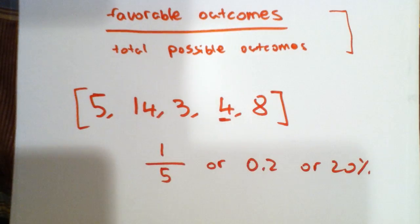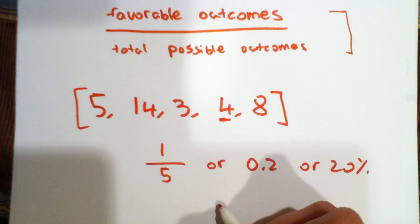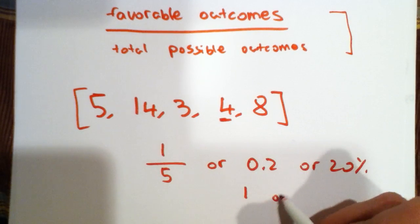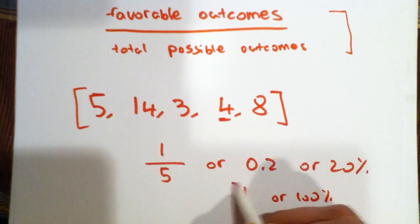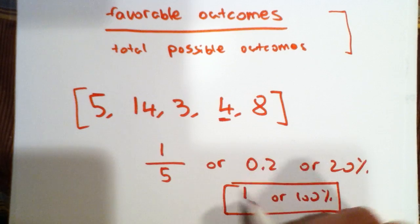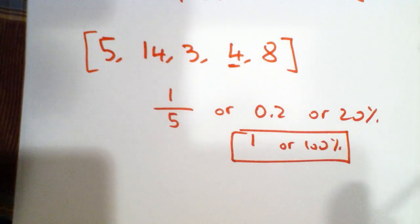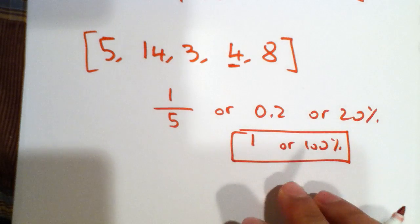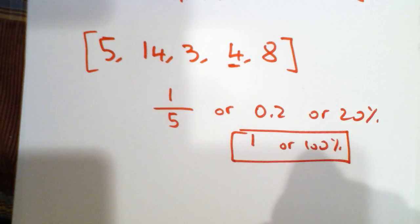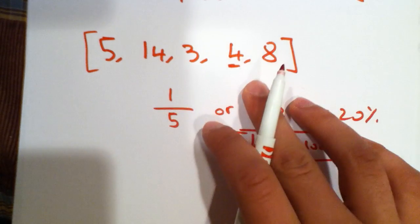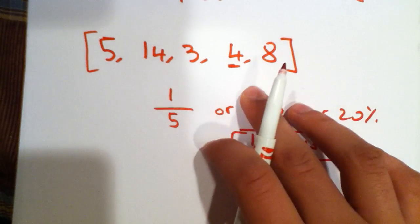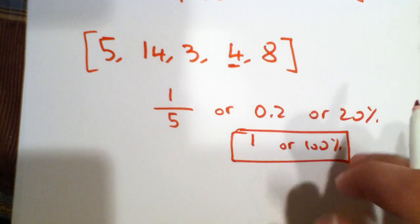Probability is always out of 1 or 100%. This is what probability is always out of. So the maximum, if the only number in the set was 4 and that's the only number we could pick, the probability would be 1 or 100%.